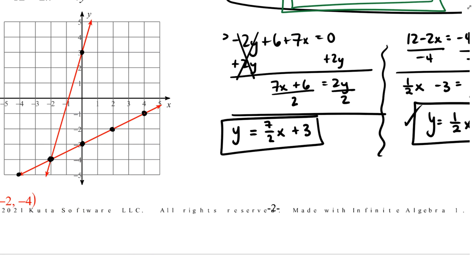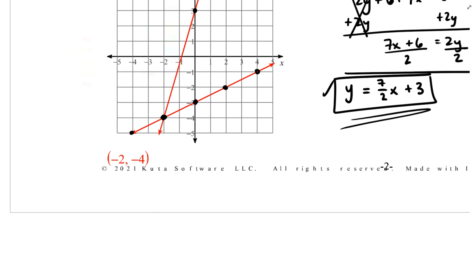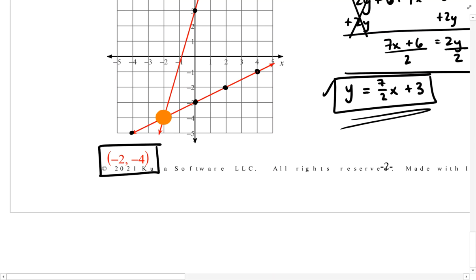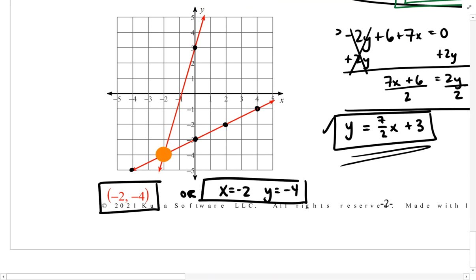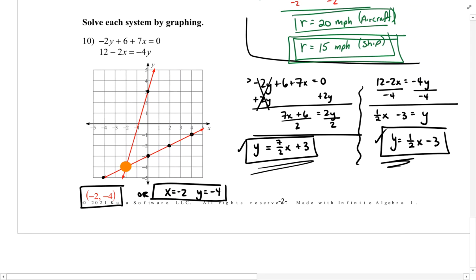While each line represents all of the solutions to the equation separately, there's only one solution that applies to both. And that is the point of intersection right here. And that point is located at negative 2, negative 4. So we can report our answer like this. I'm perfectly fine with that. Or you can state that x is equal to negative 2 and y is equal to negative 4. Because when we solve a system of equations, we want not only the x value, but also the y value associated with it.